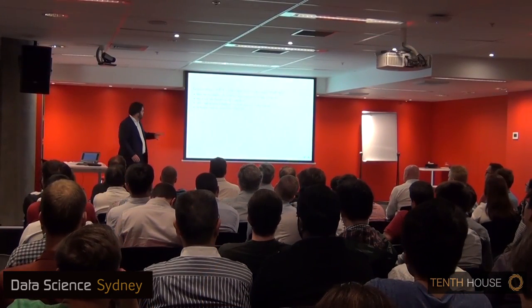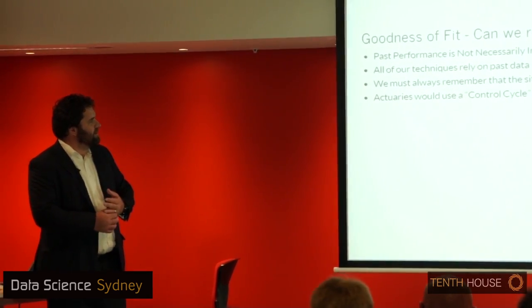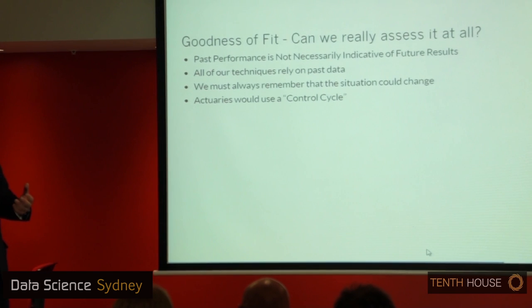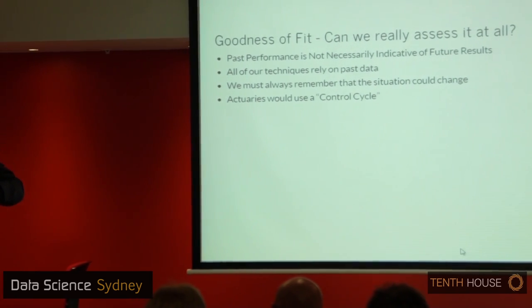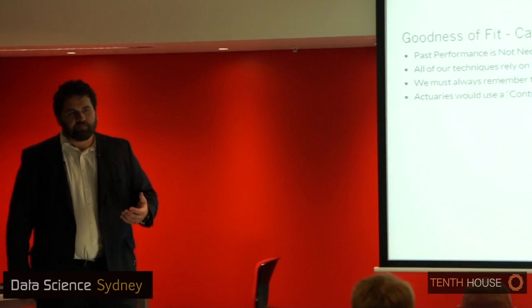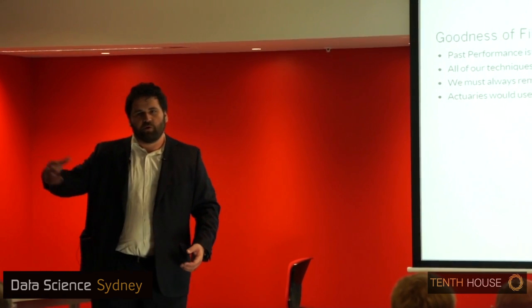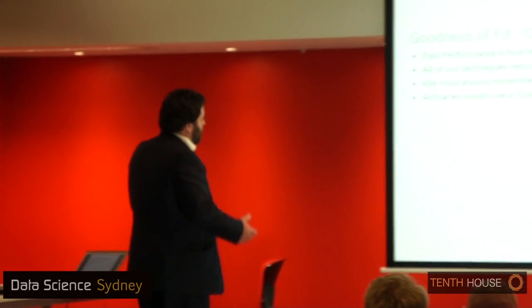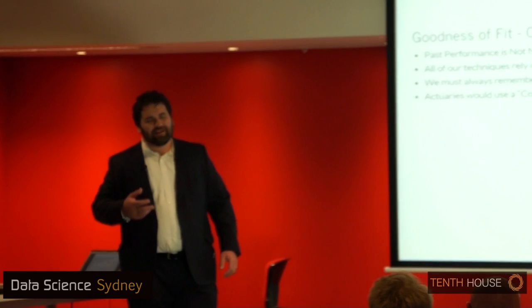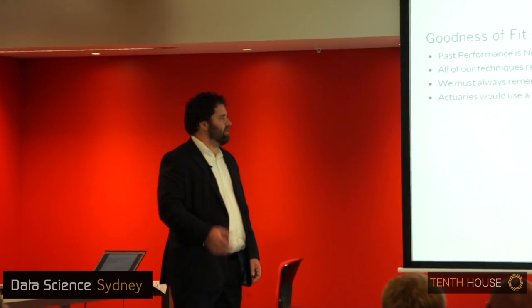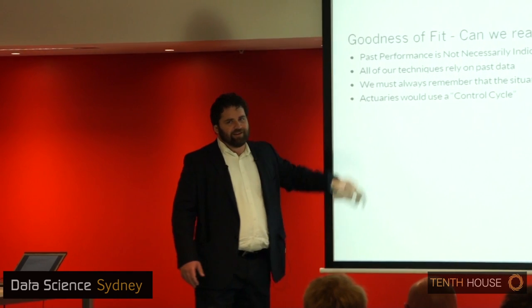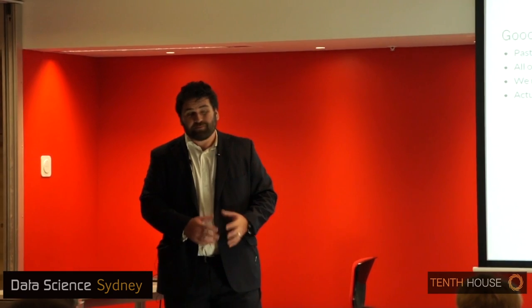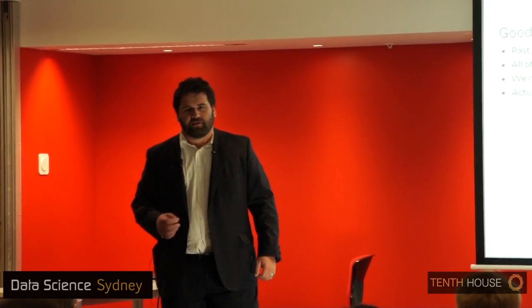The final point on goodness of fit: past performance is not necessarily indicative of future results. We do all of this to avoid kidding ourselves with the model, but sometimes it doesn't work — the world changes and generates data we don't have in our historical data. So we need model monitoring: processes in place to track how things are going. I work with actuaries who think about these things in terms of control cycles. Don't assume that because the model worked when you built it, it will always work. It probably will when you first deploy it, but it can change, so make sure you track it.